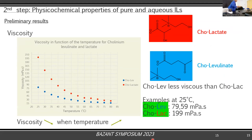I have done the measurement of viscosity on the short-chain ionic liquids — the choline lactate and choline levulinate. On this graphic you can see that choline levulinate is less viscous than choline lactate. At 25 degrees, for choline levulinate it's around 80 mPa·s, and for choline lactate at 25 degrees it's around 2000 mPa·s. The viscosity decreases when the temperature increases.